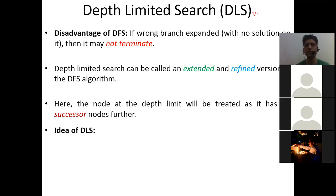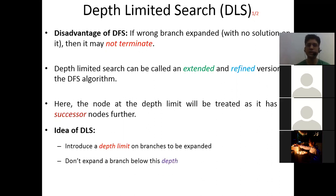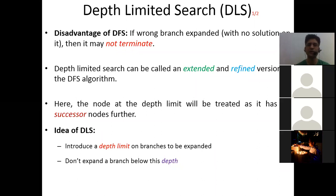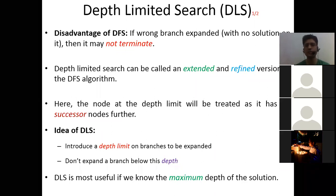The idea of depth limited search is: first, introduce a depth limit on branches to be expanded — we put a depth limit beyond which we don't want to visit. Second, don't expand a branch below this depth. This is pretty similar to DFS; we use a stack to visit nodes, but there is one more component you have to provide, which is the depth limit. If that depth limit is reached, you don't have to visit the successor nodes further.